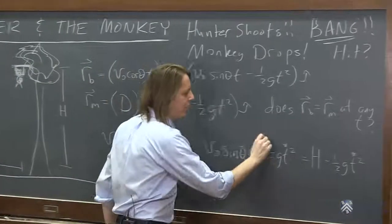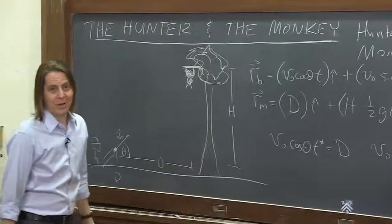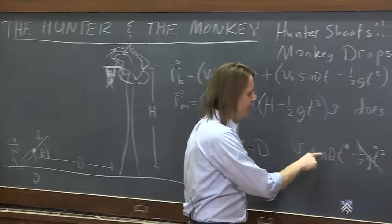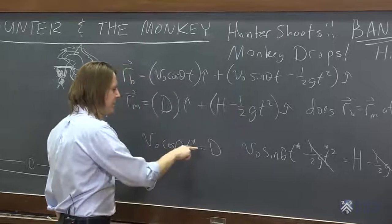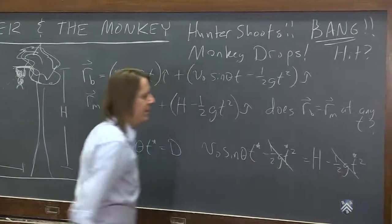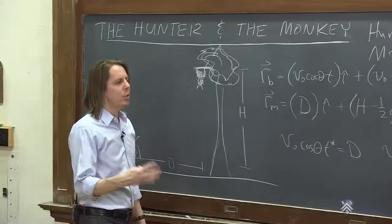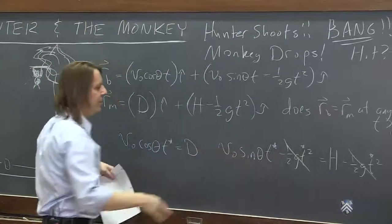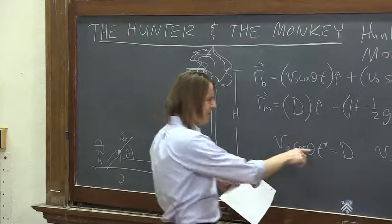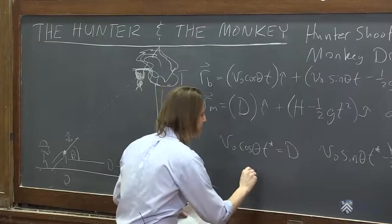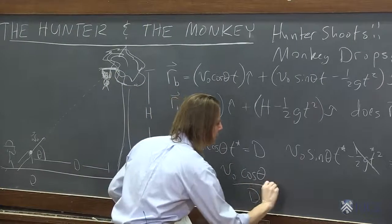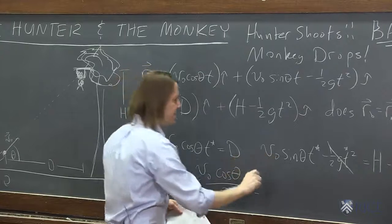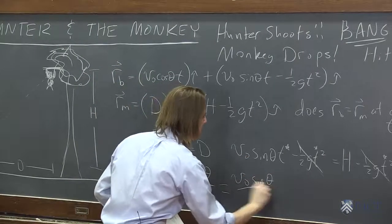So let's do it first by just equating x and equating y and see if there's any time where the x components will be the same and the y components will be the same. Is there a time when v0 cosine theta t star equals d, and is there a time when v0 sine theta t star minus one-half gt squared equals h minus one-half gt squared? These are all t stars. Is there such a specific time when those are both true? Well, one thing you'll see is they both have this term. That goes away. That's a hint to the answer. Their gravity terms cancel.